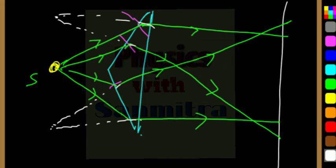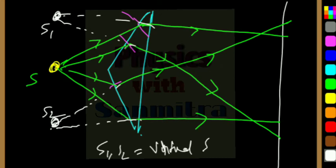...if I can produce them backwards, then I can say that this is my source S1 and this is my source S2. They are not meeting at a point - they are just being produced backwards. So I can say these are my virtual sources, S1 and S2.